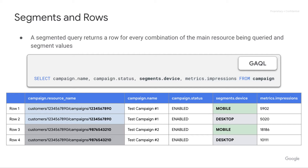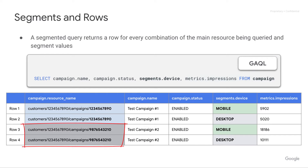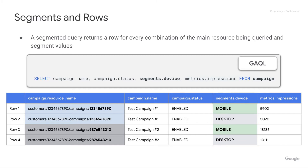Let's assume there are only two campaigns in our account. They use the same color coding as the previous slide. However, each one is further segmented by the devices which people use to view your ads. For simplicity, we're assuming people only looked at your ads on either mobile or desktop. So instead of getting two rows, we now get four rows.